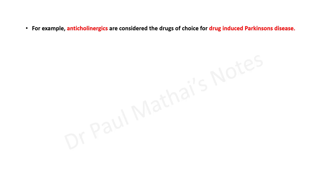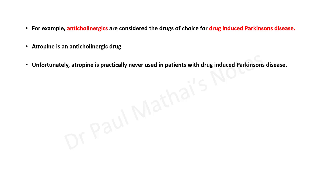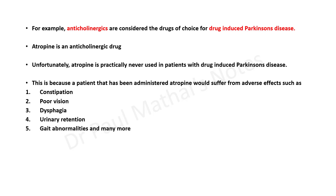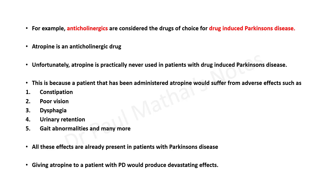For example, take drug-induced Parkinson's disease. Anticholinergics are considered the drugs of choice for drug-induced Parkinson's disease. However, atropine is practically never used in these patients because it would cause adverse effects such as constipation, poor vision due to dilated pupil and double vision, dysphagia, urinary retention, gait abnormalities, and more — all effects already present in a Parkinson's patient. Giving atropine would therefore produce devastating effects.